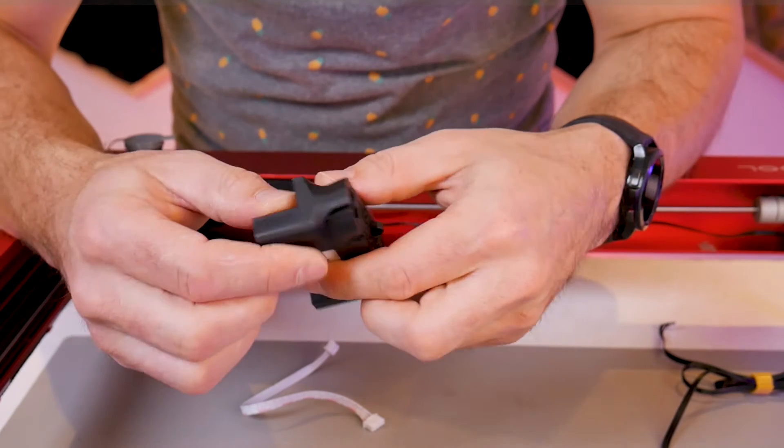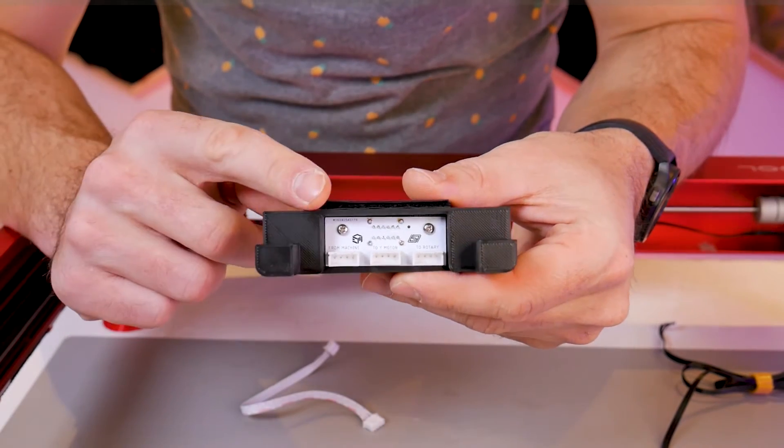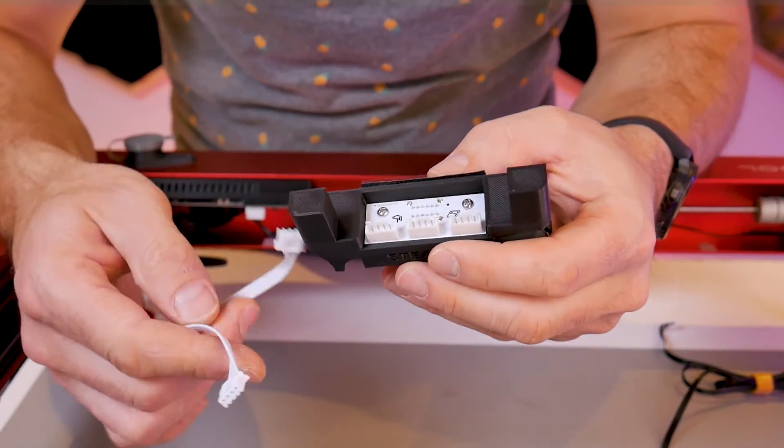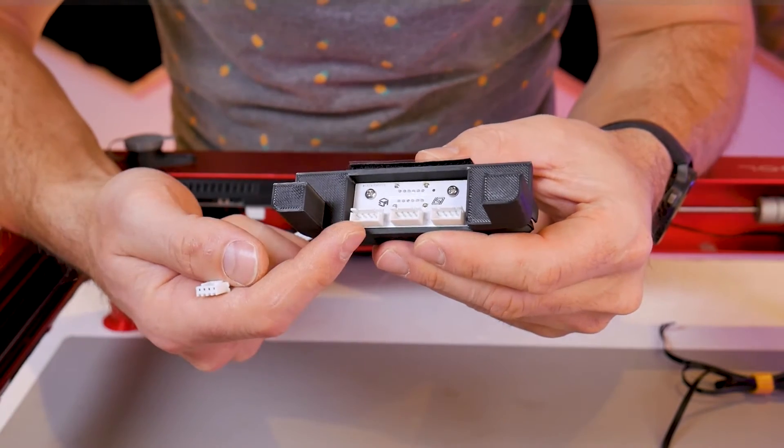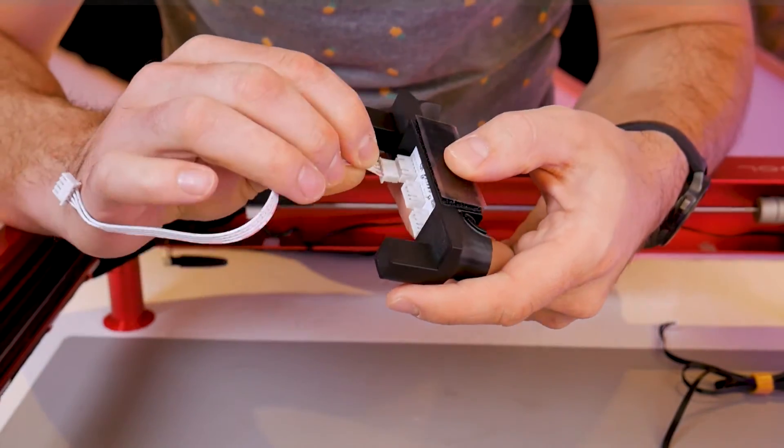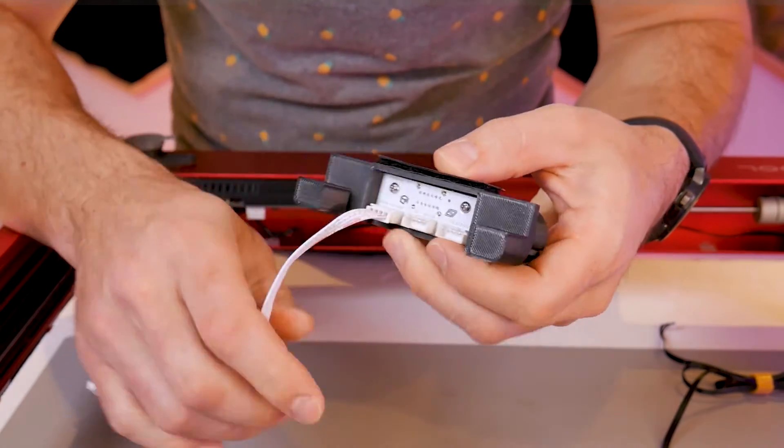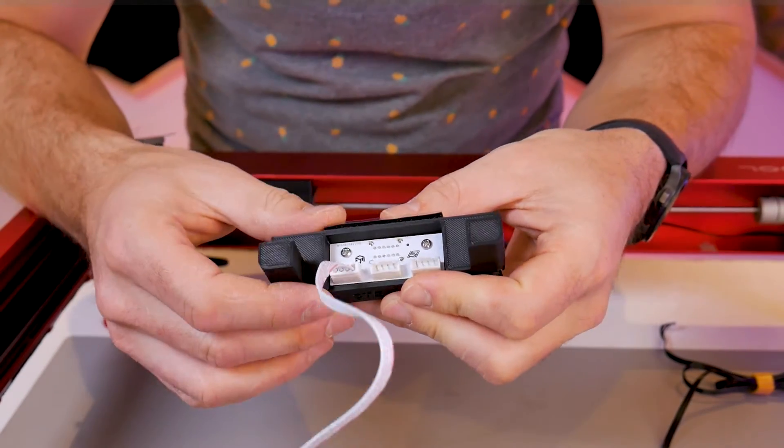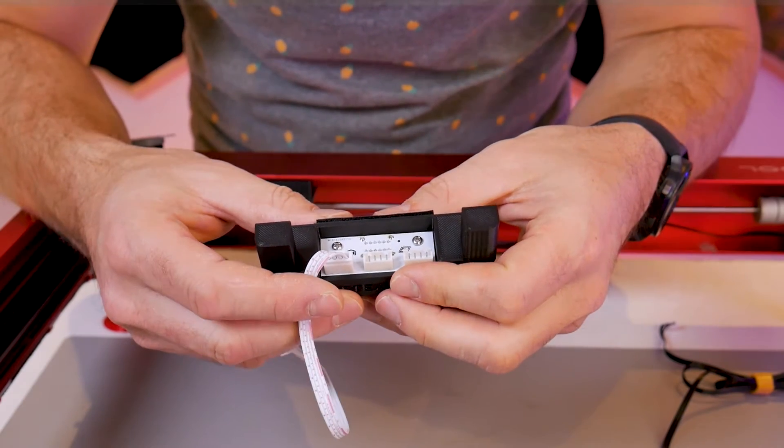On the back you'll find the connectors, and included in the kit you'll get the wiring harness required to complete the assembly. When looking at the back of the switch, the far left connector has a label that reads 'from machine'. This is where you're going to plug in one end of the included wiring harness and it doesn't matter which end.